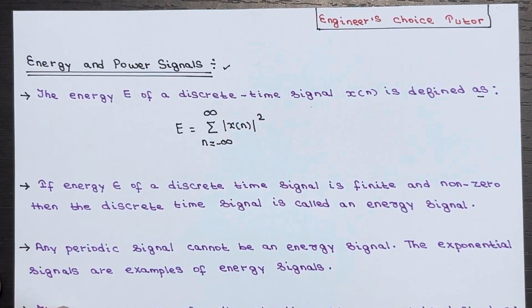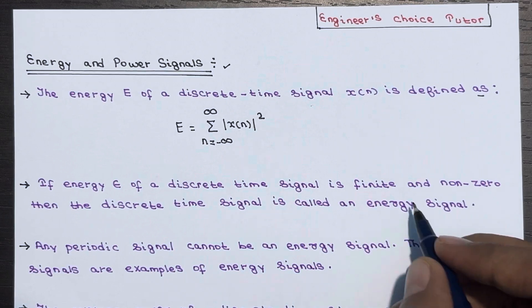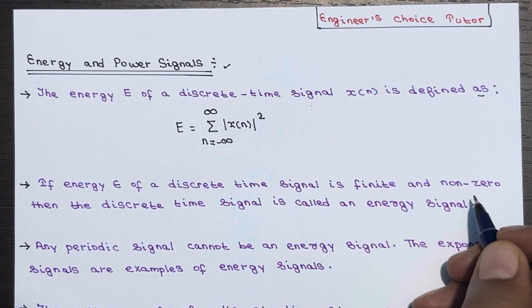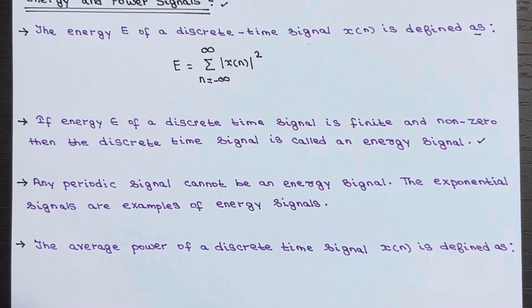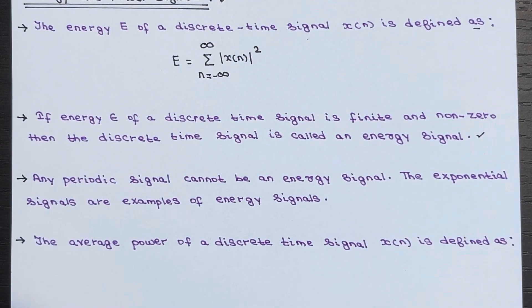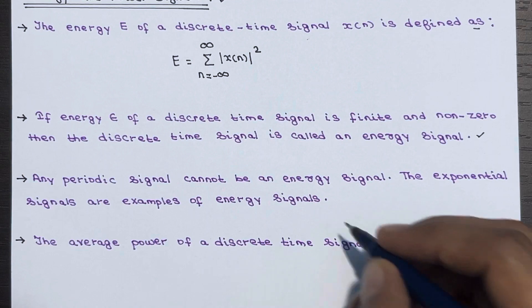If energy E of a discrete-time signal is both finite and non-zero, then it is classified as an energy signal. It is important to note that periodic signals cannot be categorized as energy signals. However, exponential signals are examples of energy signals.